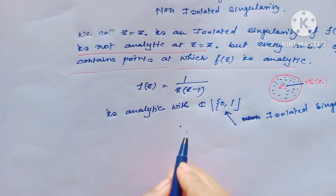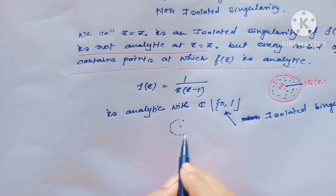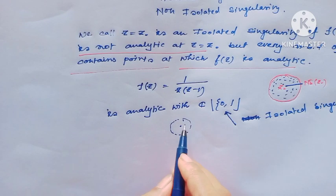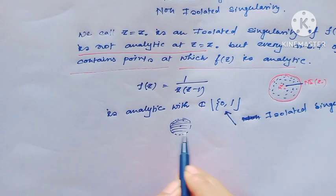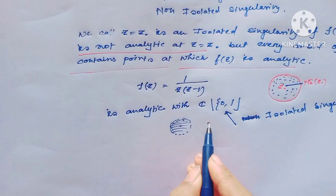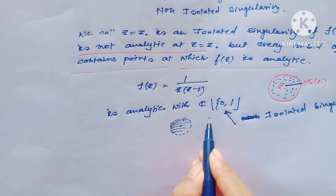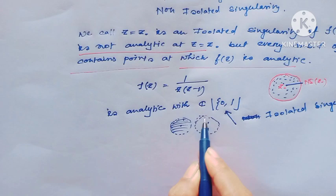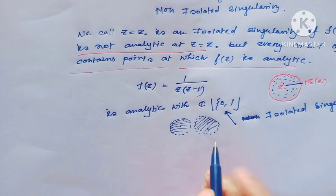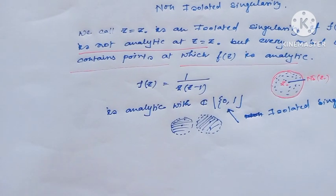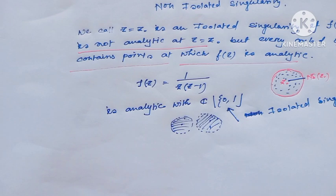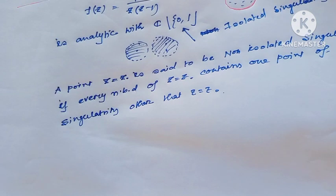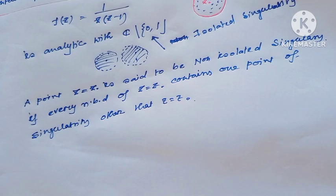At the point zero, there always exists a neighborhood at which the function is analytic — only not analytic at the point zero itself. Similarly, at the point one, the function always has a neighborhood where it is analytic, but not analytic only at the point one. I hope all viewers have understood.